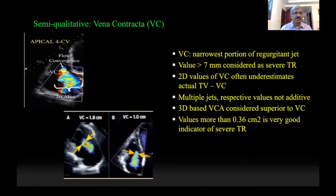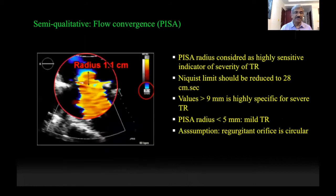For semi-quantitative assessment, the most important parameter is the vena contracta, which is the narrowest portion of the regurgitation jet. A value of more than 7 mm is generally considered severe TR. 2D values always underestimate the actual vena contracta because 3D studies have shown that the vena contracta is more of an anteroposterior than a lateral diameter. Studies have shown that a vena contracta area by 3D of more than 0.36 cm² is considered severe TR. We also look at the PISA radius — a radius of more than 0.9 cm is generally considered severe TR, while a value of less than 5 mm is generally considered mild TR.